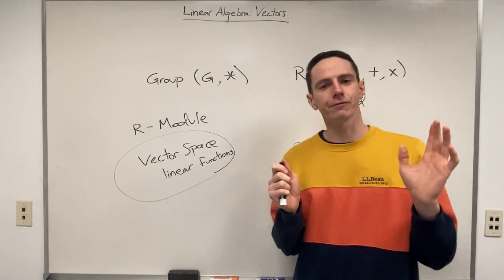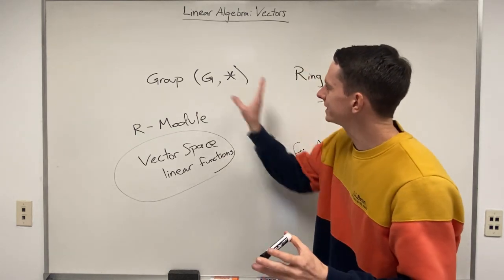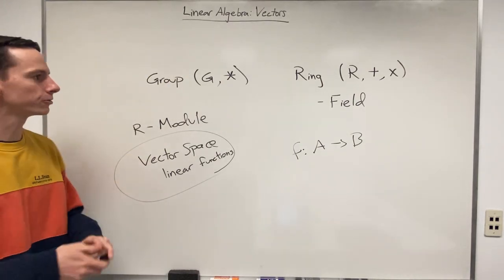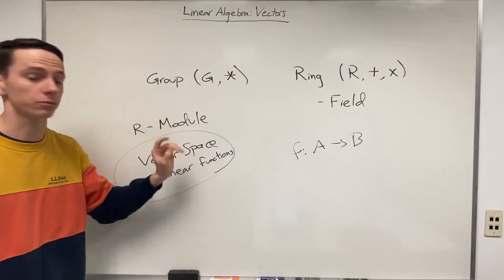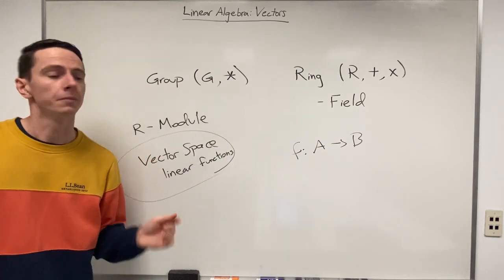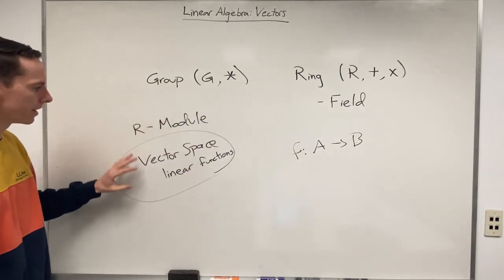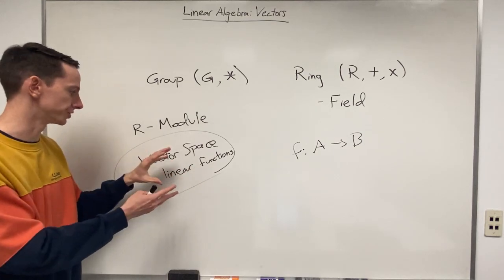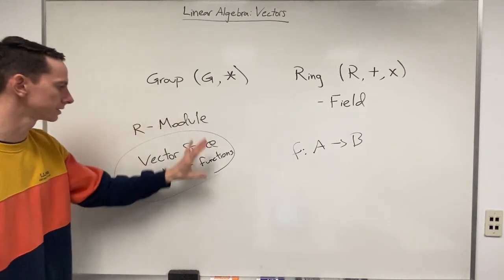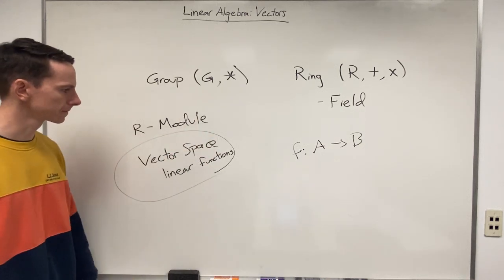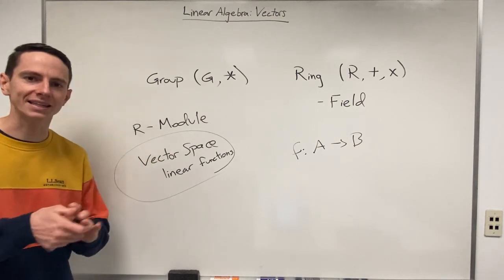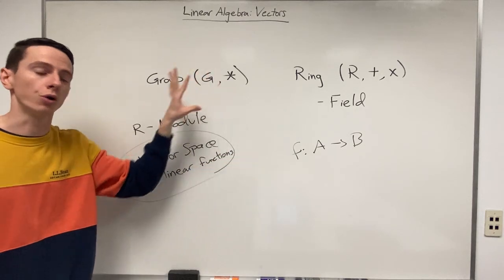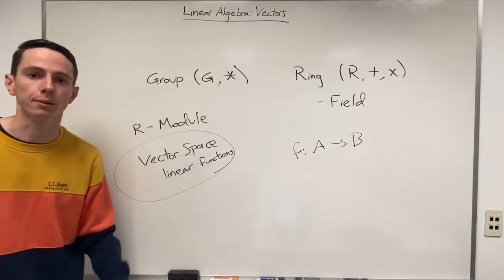If this all sounds very confusing right now, that's okay. The idea here is not to get a perfect understanding of all these objects, but rather to say that out of all the different algebraic objects that could show up in modern algebra, this is the context — the vector space — that this video series is going to be interested in. It's going to be interested in studying this realm of modern algebra, and we can see how linear algebra fits into one piece of the overall puzzle.